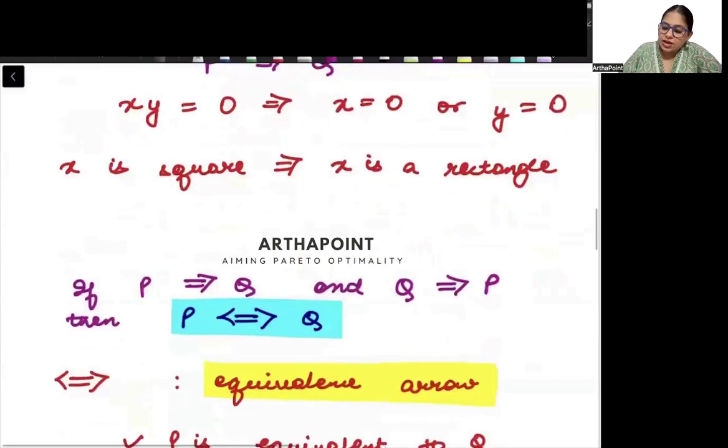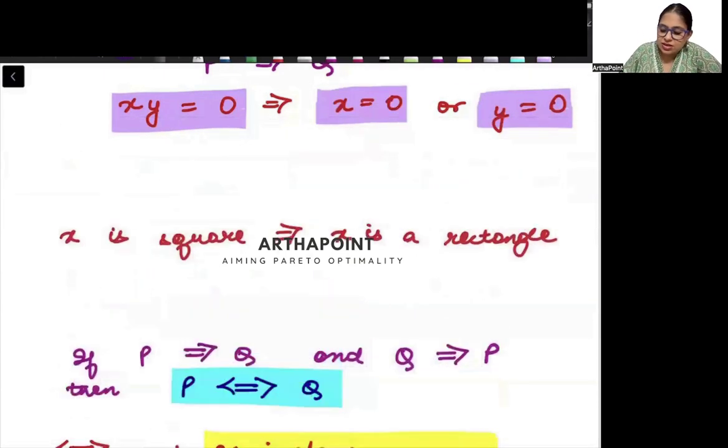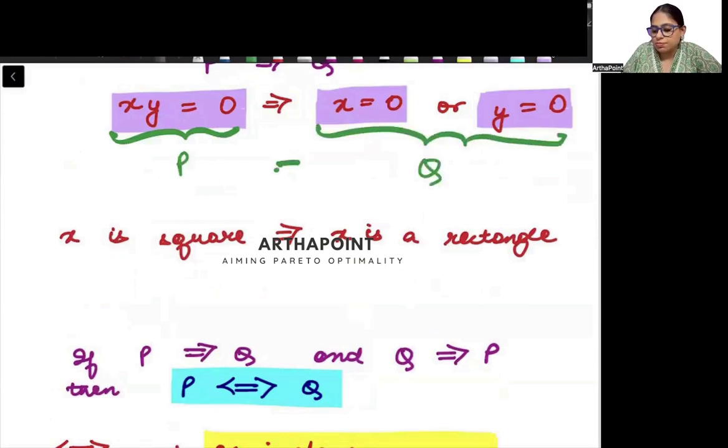Beta, next statement. XY is equal to 0. When will XY be 0, beta? Ya X 0 hoga, ya Y 0 hoga, only then the product will be 0. So when XY is 0, it means, either X is 0, or Y is 0. So this can be called as P implies Q.